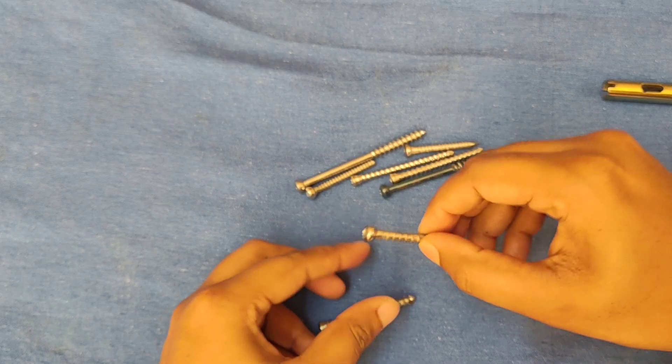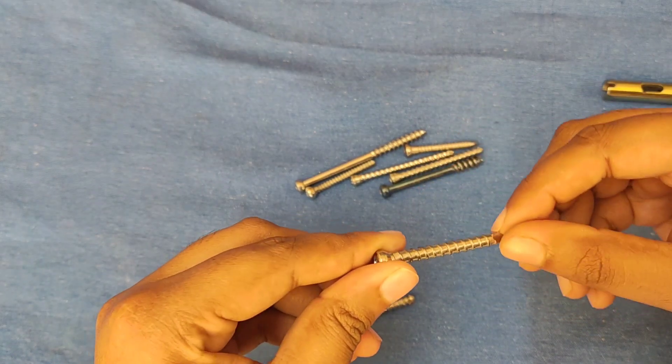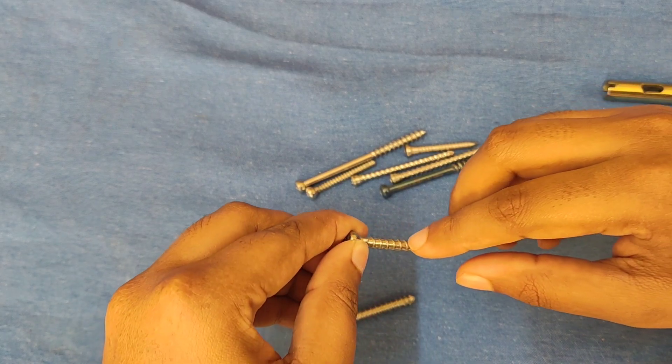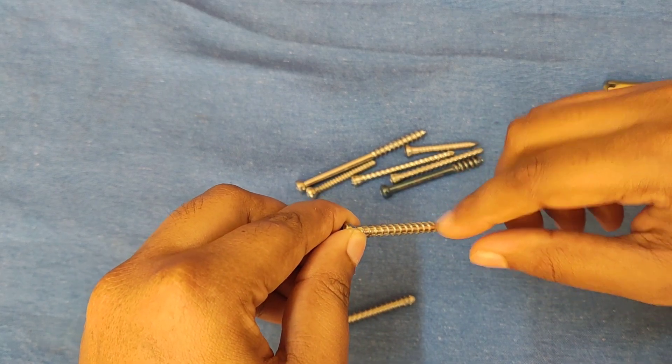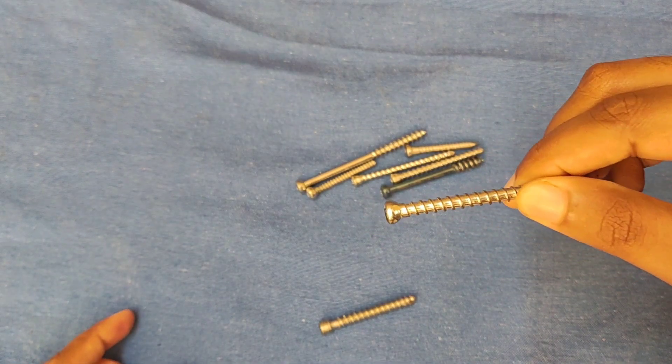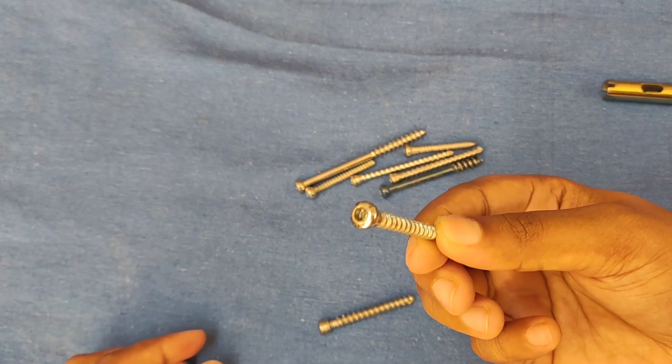Now we will discuss the difference between a cortical and a cancellous screw. Cortical screw has more core diameter and less depth of thread. It has a lesser thread diameter, lesser pitch, and a simple tip.